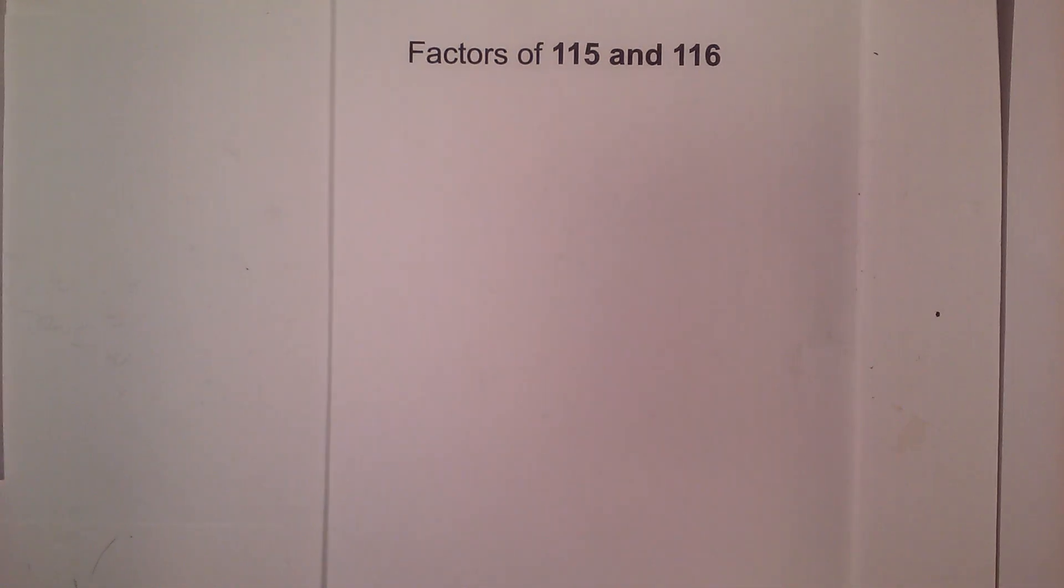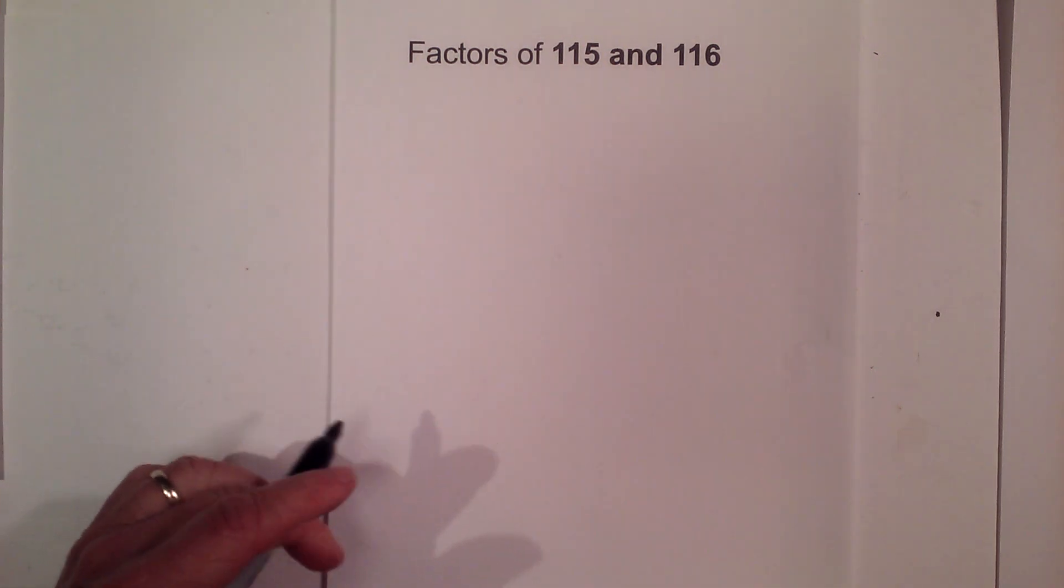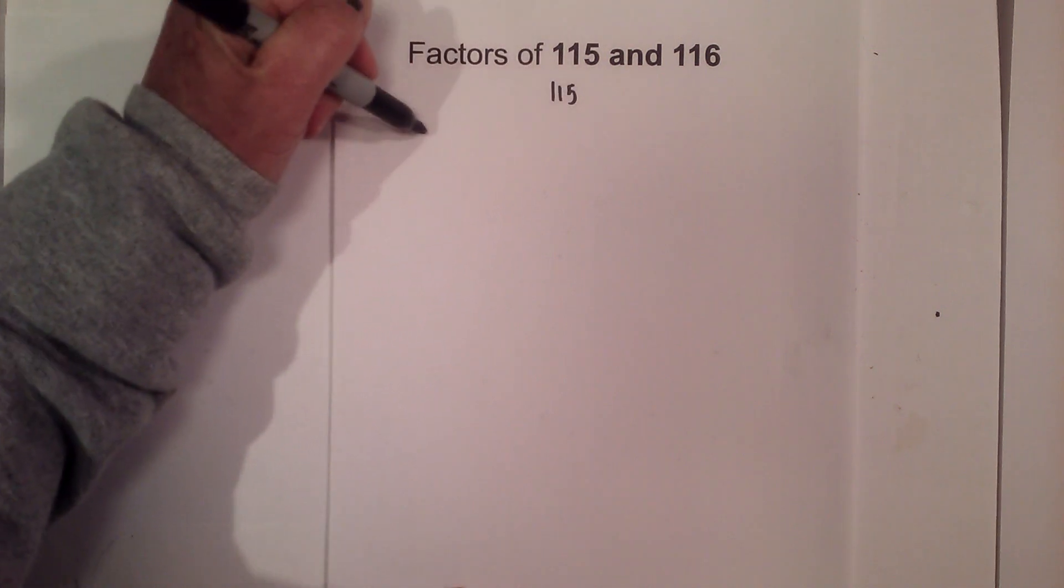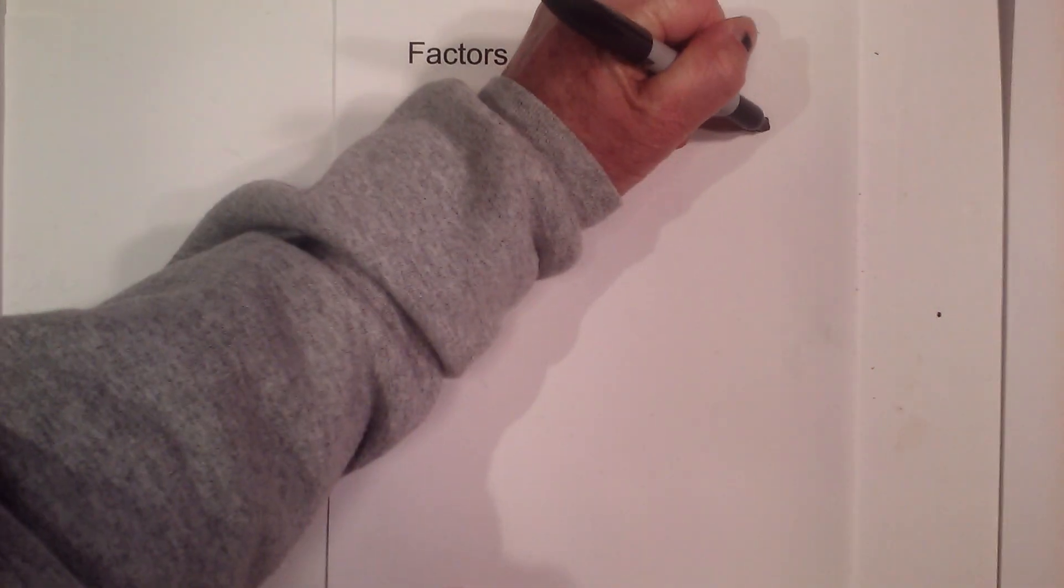Math and science and the factors of 115 and 116, and I'll include prime factorization. They're both composite numbers, so let's get started with 115. I'll begin with 1 times 115.